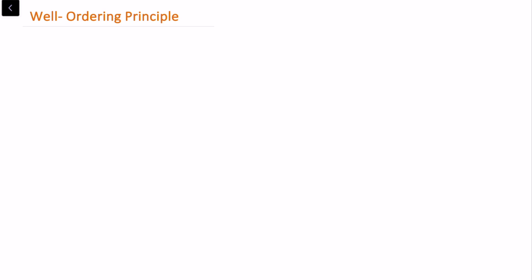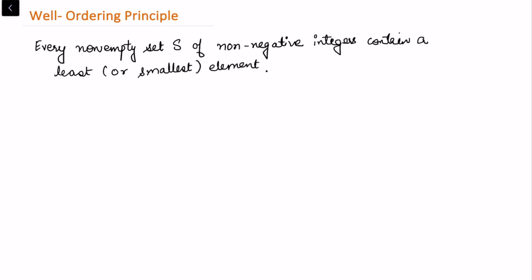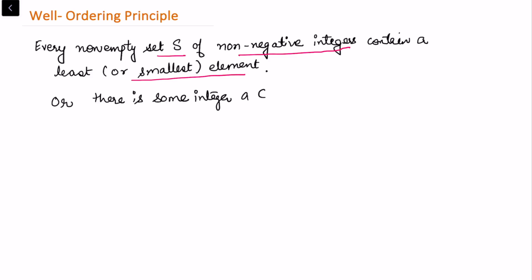In this video I'll be talking about the Well-Ordering Principle. This principle is considered as an axiom in number theory, and in many other results we use this Well-Ordering Principle to prove those results. It states that every non-empty set S of non-negative integers contains a least or smallest element. We do not have a proof for this principle — we assume that this is an axiom, that this fact is true.